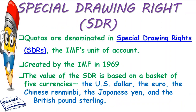If we talk about the SDR — Special Drawing Rights — it is the IMF's unit of account. IMF does not work on any single currency. The SDR was created in 1969. The SDR value depends on these 5 currencies: US Dollar, Euro, Chinese Renminbi, Japanese Yen, and British Pound.